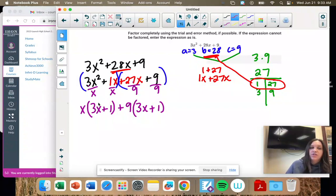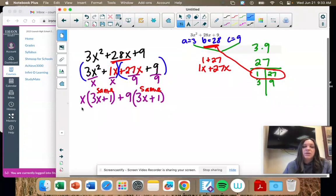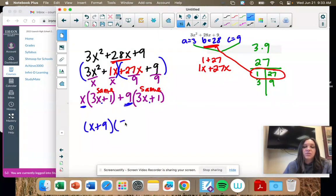So you know you're doing this correctly when these are the same. If these are not the same, something's wrong. And then our factored form is what we took out. So X plus 9 times this one that's doubled once, 3X plus 1.